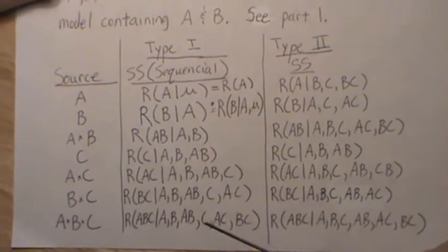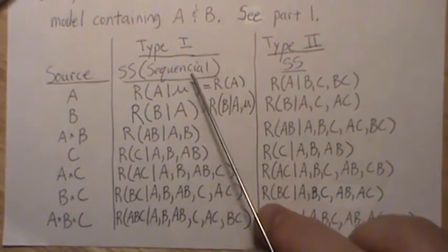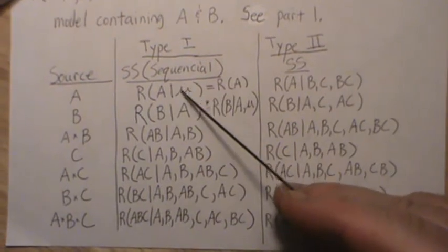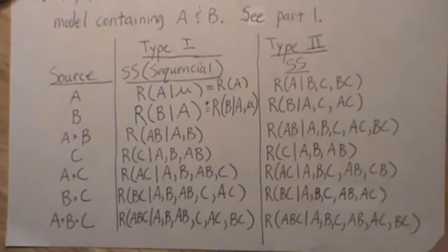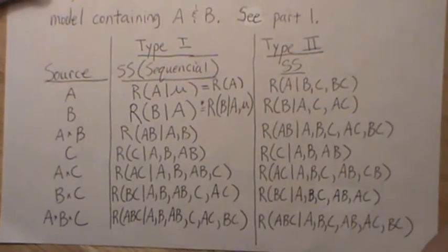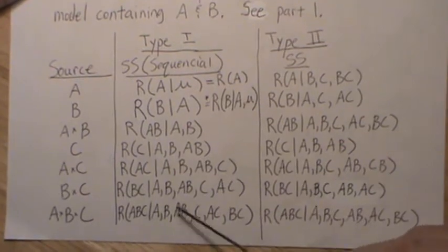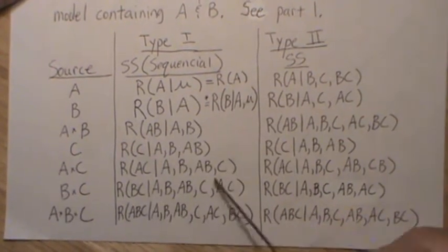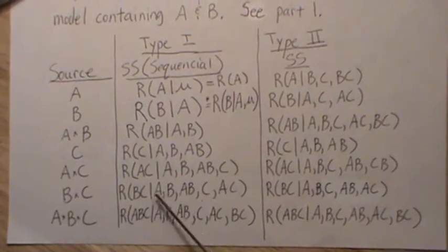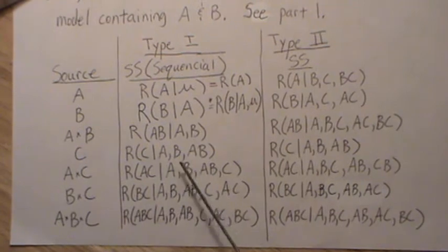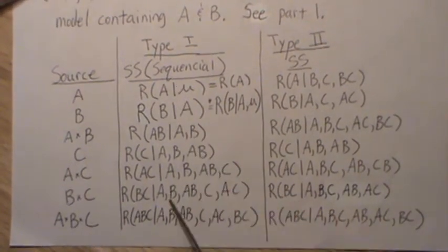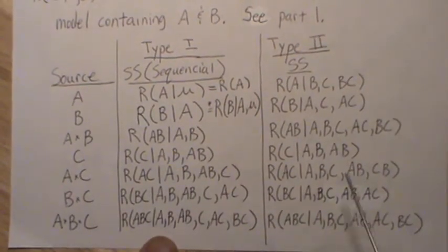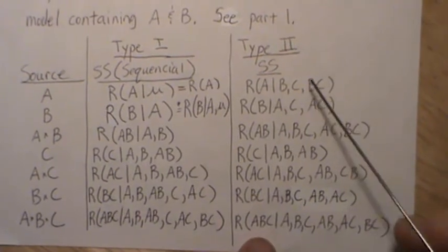One of the beauties of type 1 sums of squares is that it actually partitions the model, and these will add up to the sum of squares treatment. But there are also some cons associated with type 1 sums of squares.